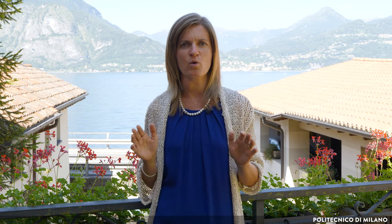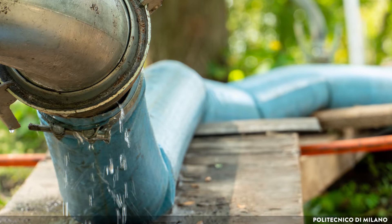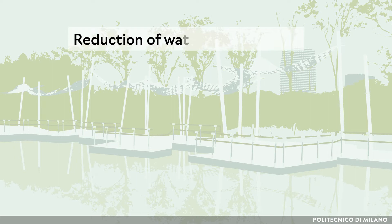The third module is about Sustainable Water Supply Strategies. It presents the principles of the advanced management of water resources in water-sensitive cities. Among these best practices, the reduction of water loss and waste, water reuse, and the use of non-conventional water resources and water harvesting are described.